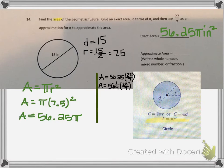Now I will rewrite 56 and 1 fourth as an improper fraction. So my area equals 225 over 4 times 22 over 7.